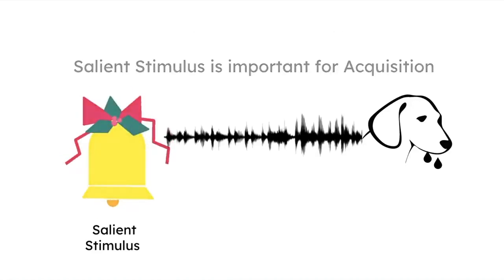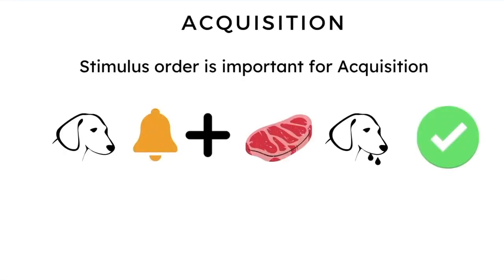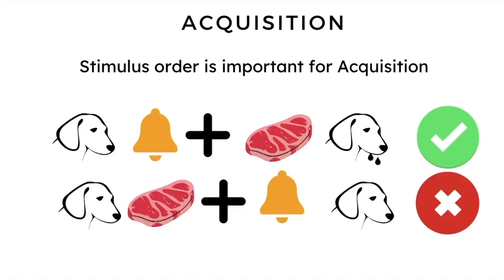Next, let's look at stimulus order and how it impacts acquisition. The order in which stimuli are presented is very important for successful acquisition. You must present the neutral stimulus before the unconditioned stimulus in order for the animal to acquire the mapping between them, as this order allows the neutral stimulus to become a conditioned stimulus, eliciting a conditioned response. If you reverse this order — presenting the unconditioned stimulus before the neutral stimulus — the animal will never learn the neutral stimulus and unconditioned stimulus pairing.